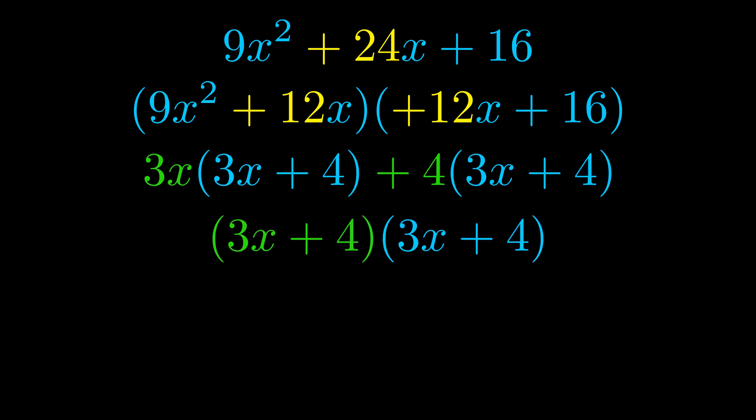Notice also how what remains inside of the parentheses is the same in both cases — the blue values are the same. Those blue values will become one of our factors, and we will combine the two green values, the GCFs that we pulled out, to get the other one. And that is our fully factored equation.